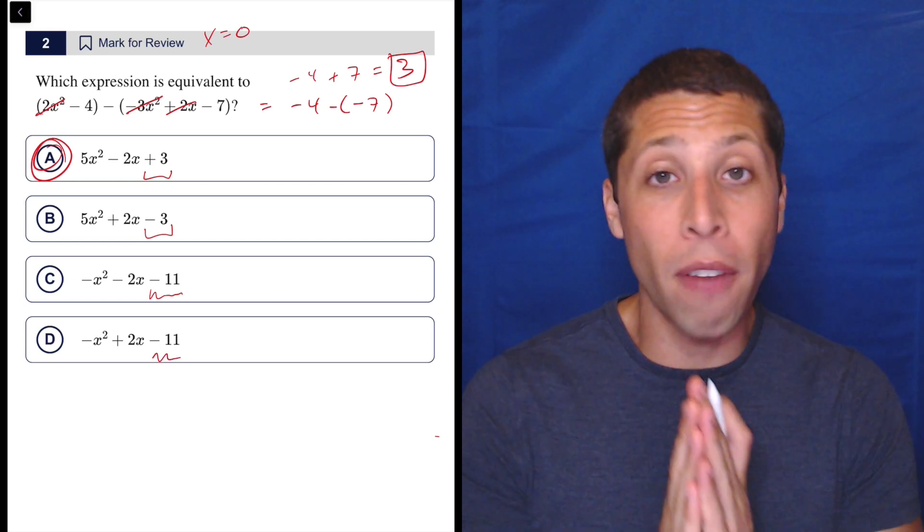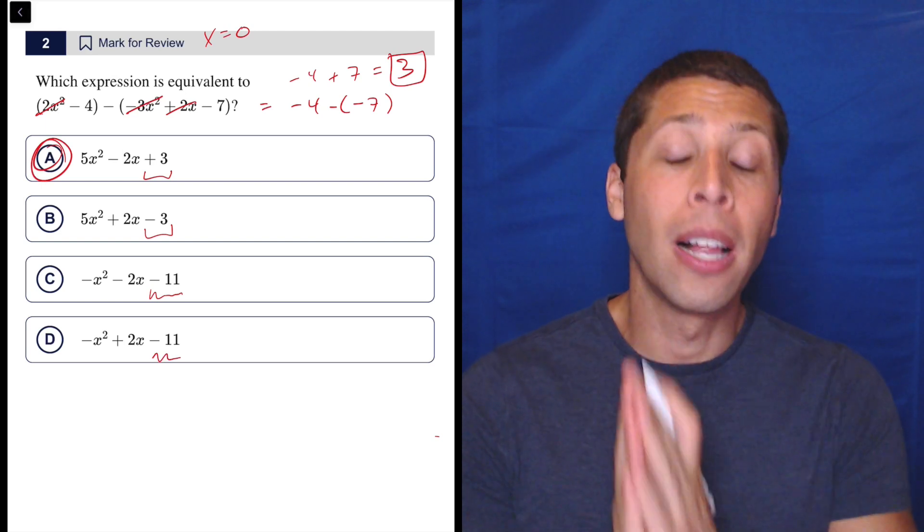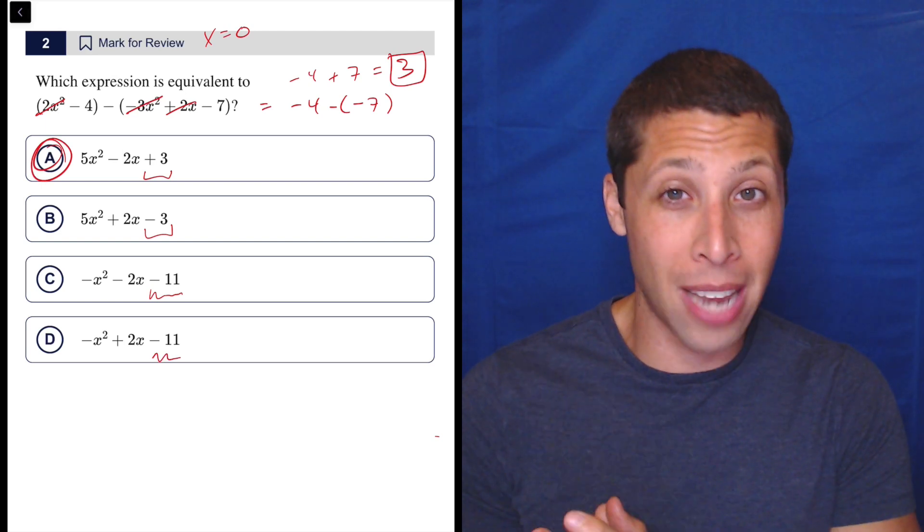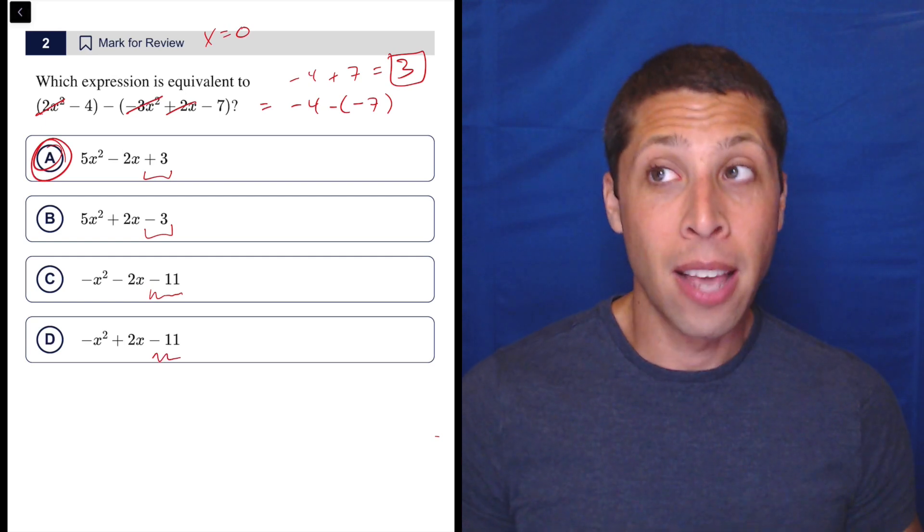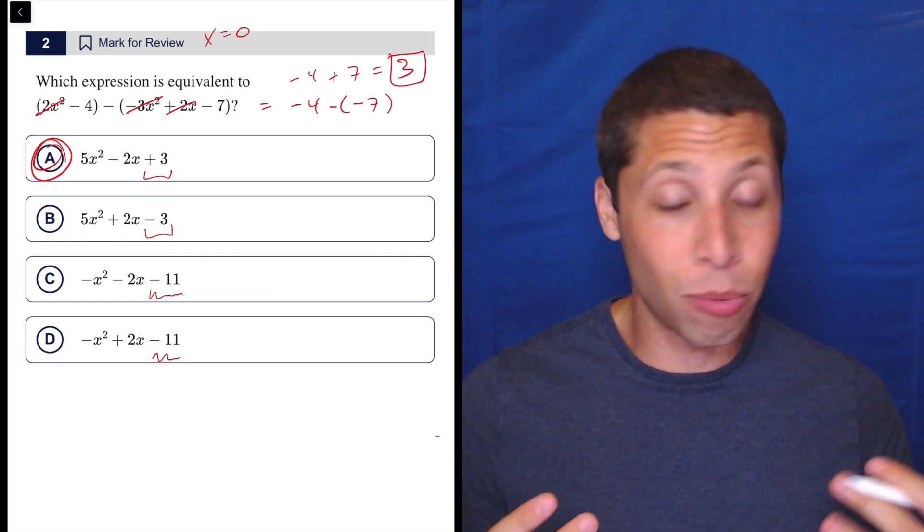So we really want to just shut off the possibility as much as possible of falling for one of those trap answer mistakes. And so the more you can just get away from algebra and put numbers in, the less likely you're going to mess it up. That's really what it comes down to.